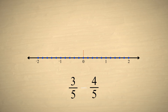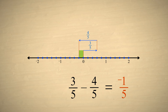If we subtract four-fifths from three-fifths, we start out at a position of three subdivisions to the right of the origin, and then move four subdivisions to the left. We end up one subdivision to the left of the origin at negative one-fifth.